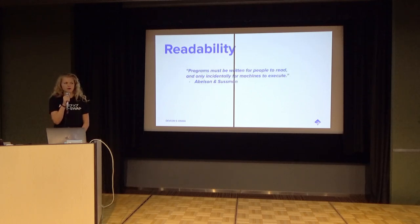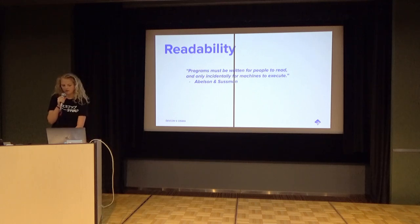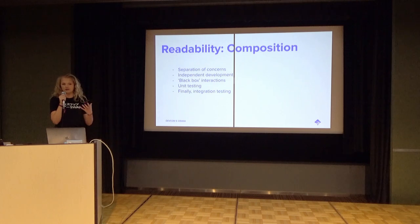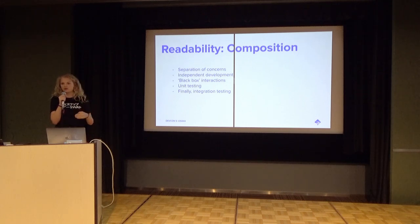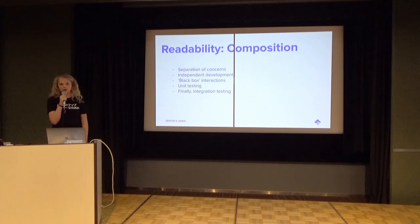There's a quote from, I think, the 1980s that's feeling more relevant than ever in Ethereum: programs must be written for people to read. With composition, we have a separation of concerns. When you want to read a smart contract and argue about what it's doing, you can read each smart contract separately, check in your head that each concern is doing what it wants to do, and only at the end bring in integration testing to see how the contracts talk to each other. Before that, you can argue about and test them all individually.